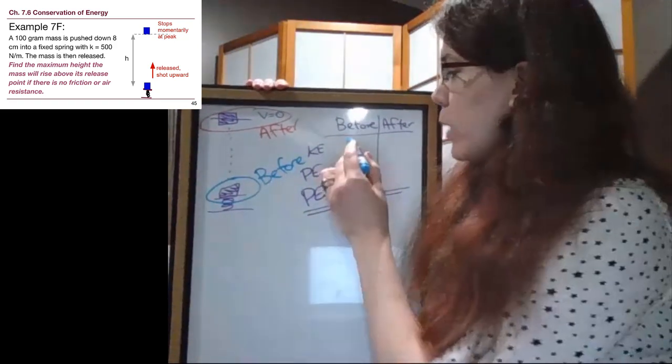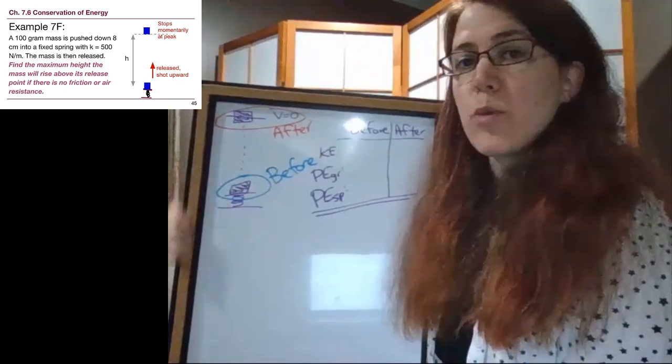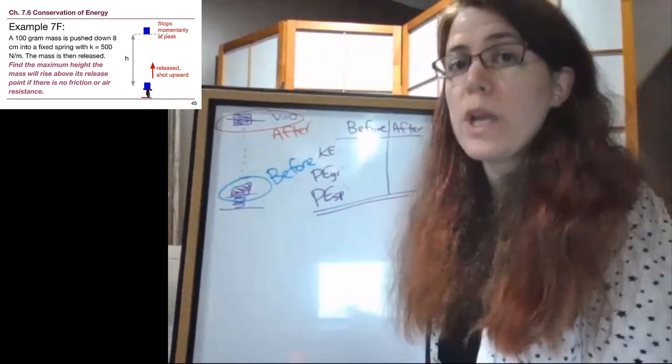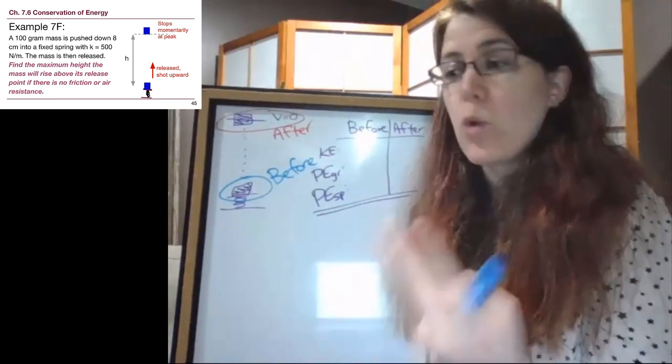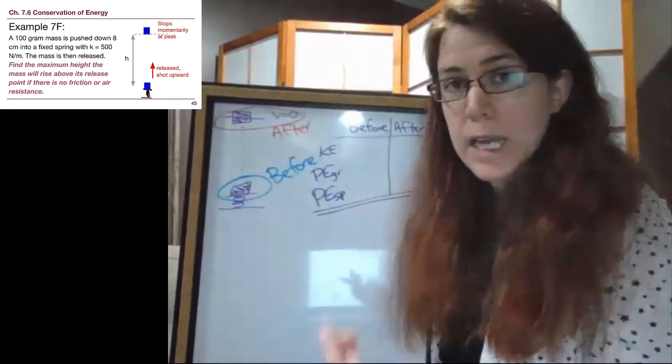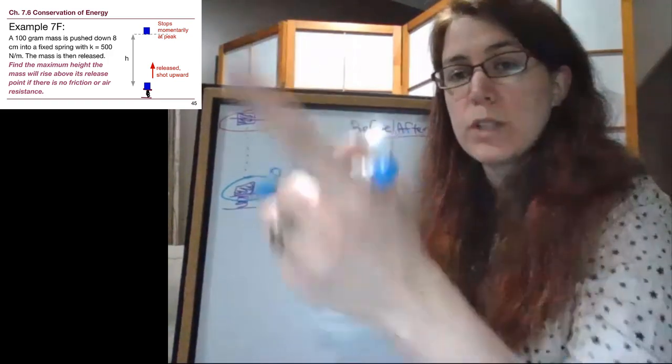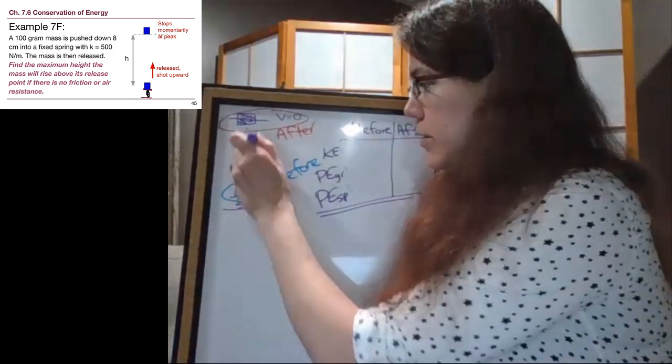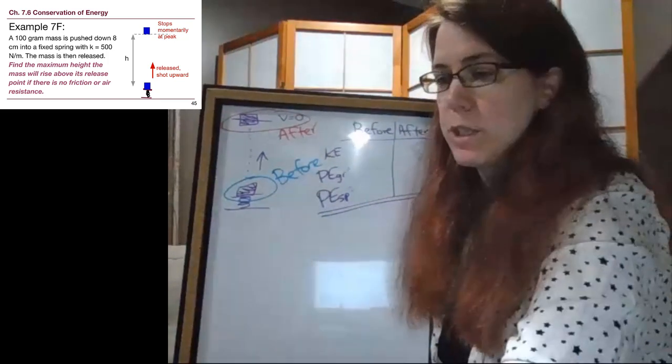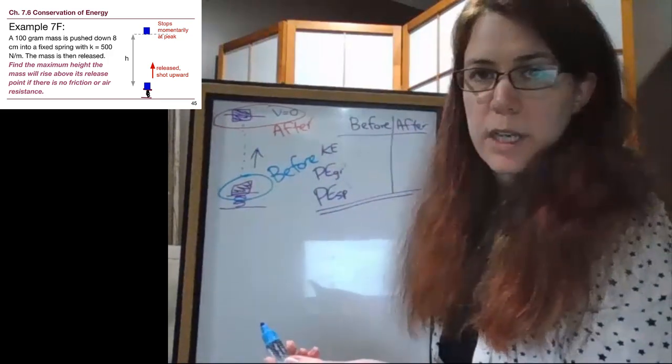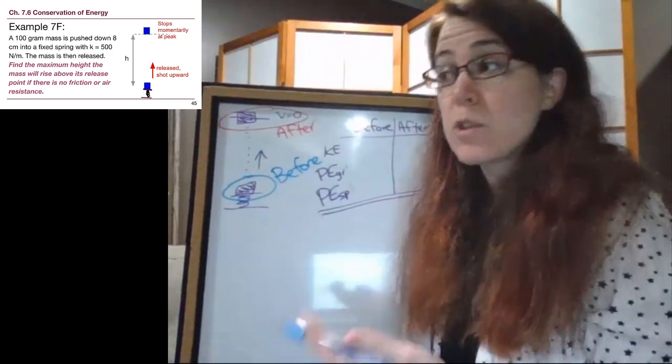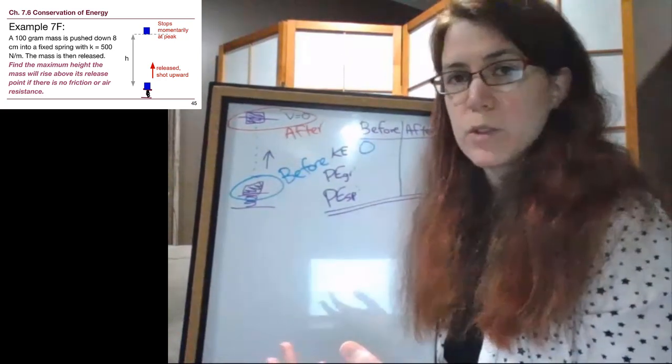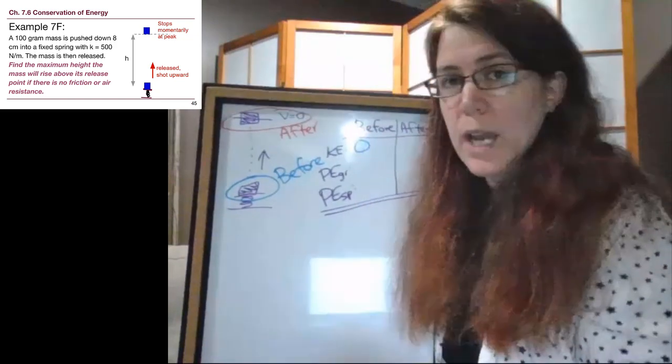So in the before situation, we ask ourselves if we have any kinetic energy. Now, just like with the entire chapter, this is going to be true the whole entire time, there's never meant to be a trick here. We either are given information about the speed or we are being asked to find it. We're not given any initial velocity. We aren't given an arrow except for it's already in the process of being shot upward after the problem has started. So the arrow on our screen would be kind of here in the middle, that it's moving upwards. But in our before situation, we're not moving. If we decided that there was somehow a kinetic energy at the beginning, we've now made the problem unsolvable because we don't have that information.